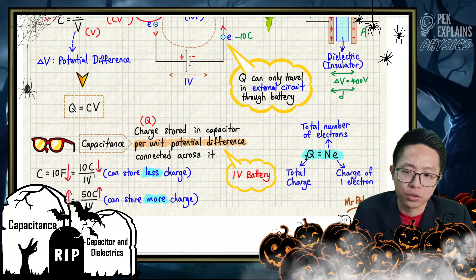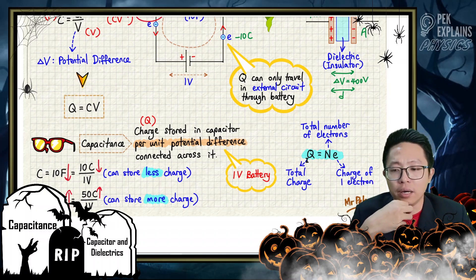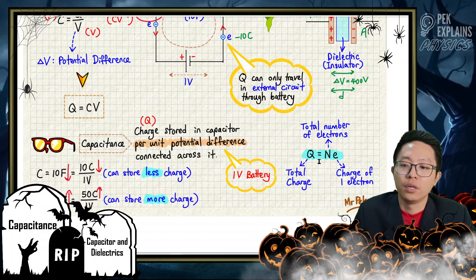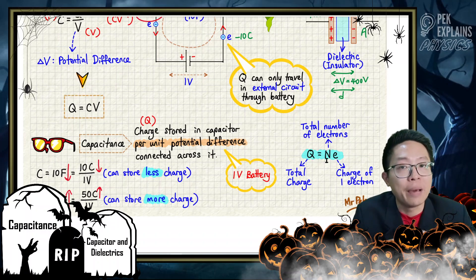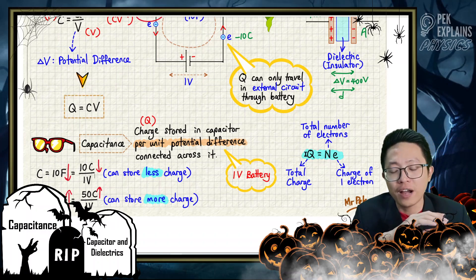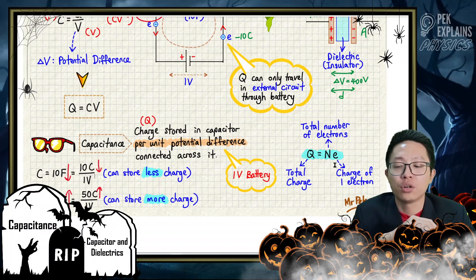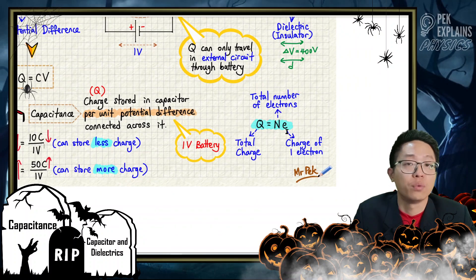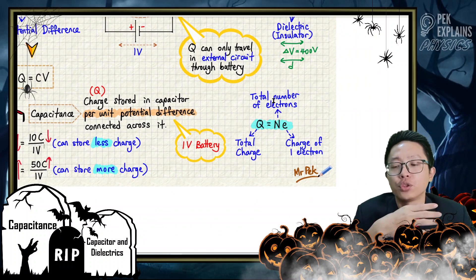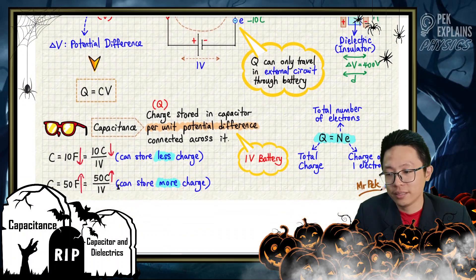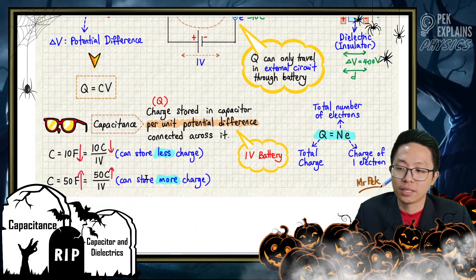If we have the total charge Q, we can find the number of electrons that flowed in the circuit by dividing the total charge by the charge of one electron: N equals Q divided by e. That gives us the total number of electrons that flowed in the circuit. That's all for capacitance — I hope you understand. Let's move on to the next videos.